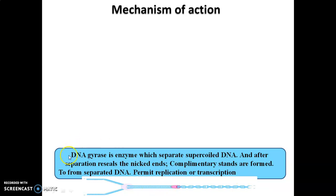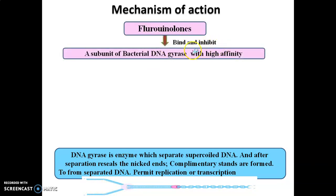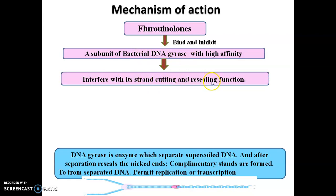What is the mechanism of fluoroquinolones? Their specific action is on the DNA gyrase enzyme. What is the function of DNA gyrase? During separation of DNA strands, supercoiling occurs like a spring, and that supercoiling is avoided by DNA gyrase. It causes negative supercoiling, which helps avoid clumping and allows easy separation of the two strands for formation of the complementary strand.